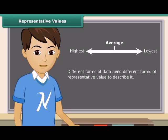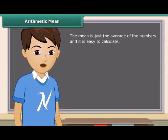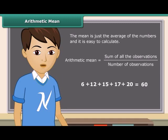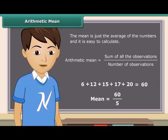Different forms of data need different forms of representative value to describe it. One of these representative values is the arithmetic mean. The mean is just the average of the numbers and it's easy to calculate. Mean is equal to the sum of all the observations divided by the number of observations. Let us calculate the mean of these numbers. The sum of these numbers is 60, and there are 5 numbers total. So the mean is equal to 60 divided by 5, which equals 12. Therefore, the mean of the above numbers is 12.